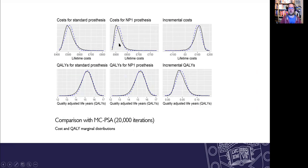And here's the output from that example. So across the top we have costs, across the bottom it's qualies. The first column is the standard prosthesis absolute outcomes, middle column is the incremental costs and the incremental quality. And in the black line is the Monte Carlo PSA with 20,000 iterations, whereas the blue dashed line is the outcome from the delta PSA. So you'll see that it is quite a good approximation other than there's a bit of skewness in the Monte Carlo PSA that doesn't get picked up by this method.